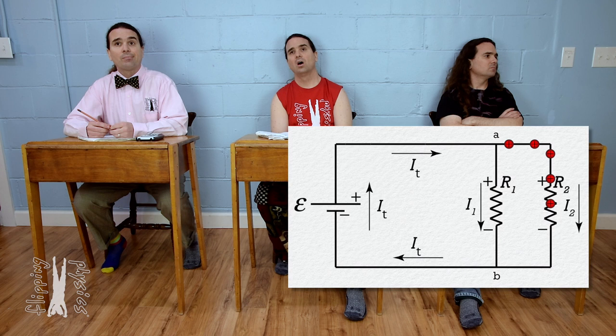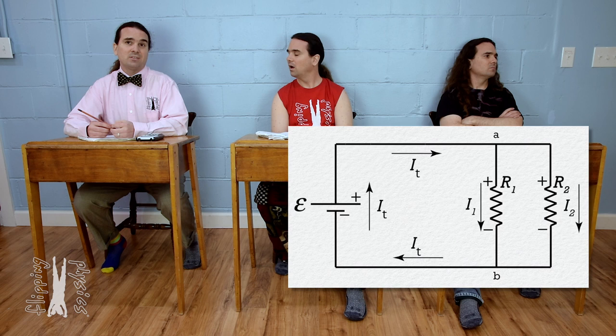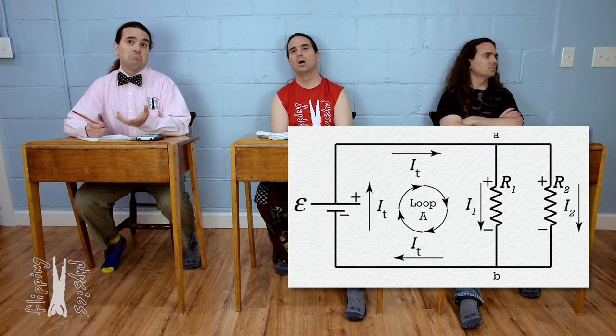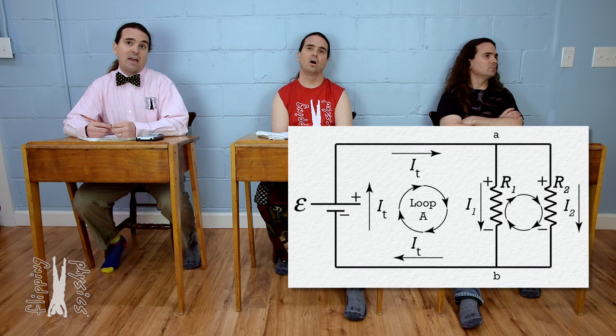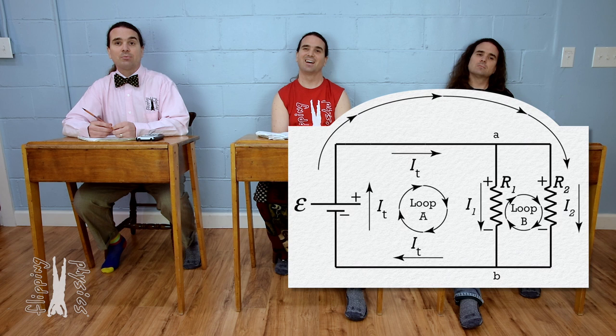We need to identify the loops in this second circuit. One loop is the same as the circuit before — let's call that loop A and use the clockwise direction. There is another loop that contains resistor 1 and resistor 2 — let's call that loop B, also clockwise. There is one more loop all the way around the outside, including the battery and resistor 2 — let's call that loop C, also clockwise.